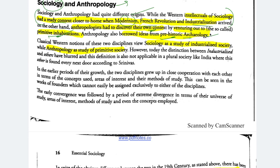Anthropologists, on the other hand, had to discover their own context because they were studying primitive societies — those that no longer exist — and they borrowed ideas from prehistoric archaeology: artifacts, culture, landscape — tangible things. Prehistoric refers to the period before written records. The classical Western notion distinguishes the two: sociology as the study of industrialized society, and anthropology as the study of primitive society.